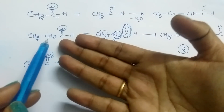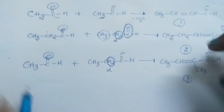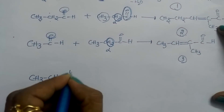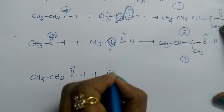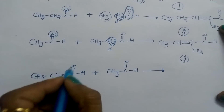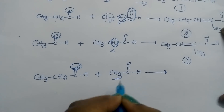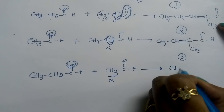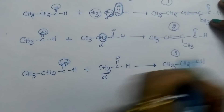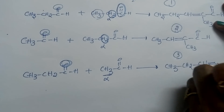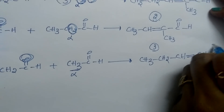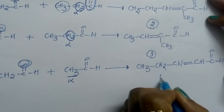If propanaldehyde reacts with acetaldehyde — remove this oxygen and two hydrogens from the alpha carbon of acetaldehyde. Then we get CH3-CH2, next is CH, the oxygen is removed so put a double bond, two hydrogens are removed so one hydrogen is left on the carbon, then C double bond O. This is the fourth product.